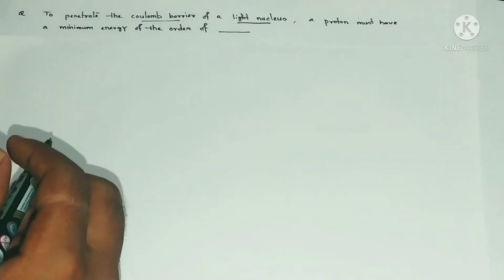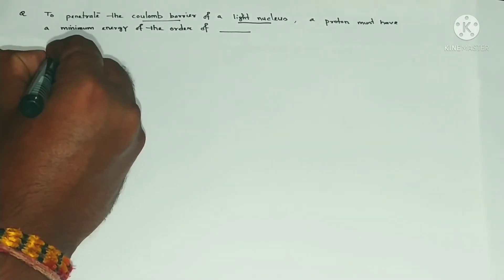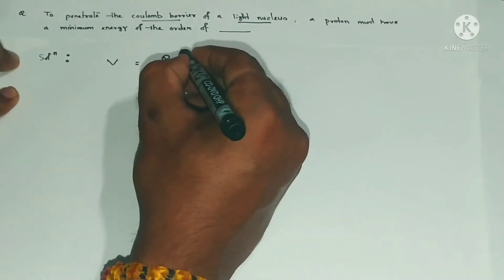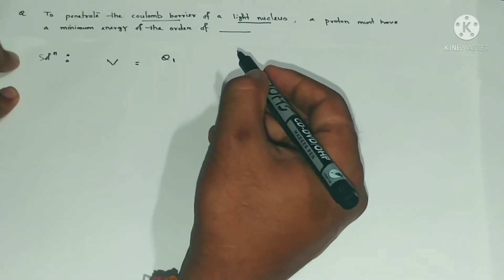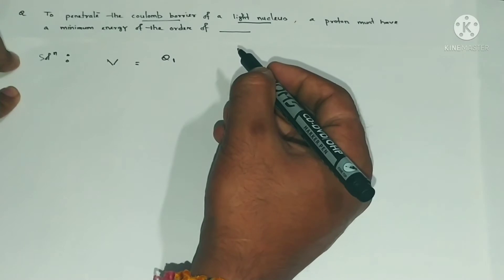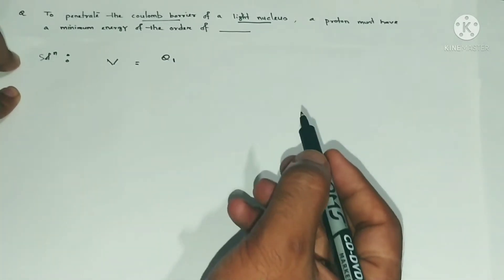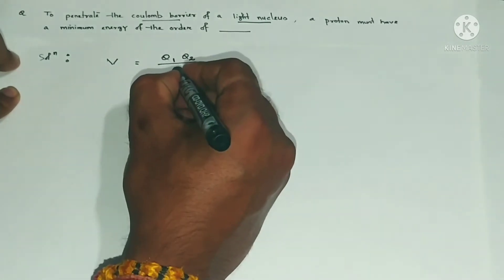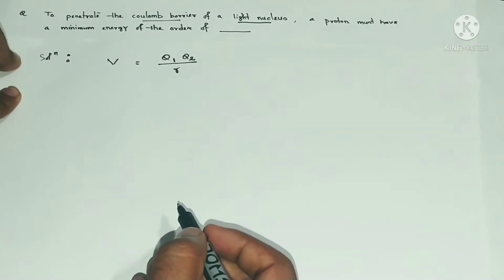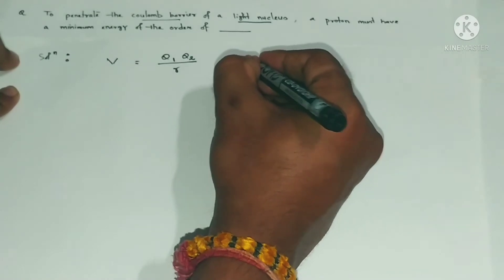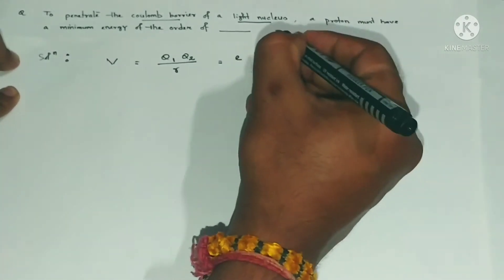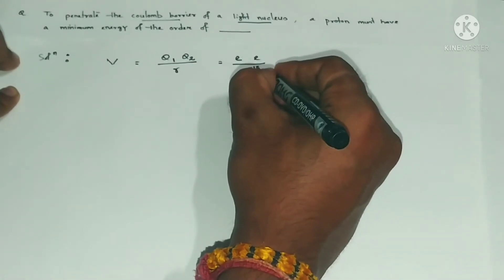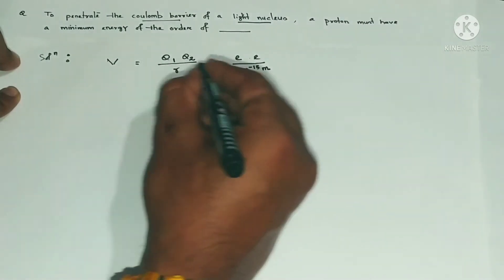The Coulomb barrier provided by the light nucleus is given by the potential V equal to k times q1 times q2 divided by r. Here q1 is the charge of the light nucleus — let's say it's a proton, the simplest light nucleus — and q2 is the charge of the proton that is going to penetrate. The radius of the nucleus will be in femtometers, that is 10 to the power minus 15 meters. So q1 is e and q2 is also e, divided by 10 to the minus 15 meter, multiplied by the constant k.